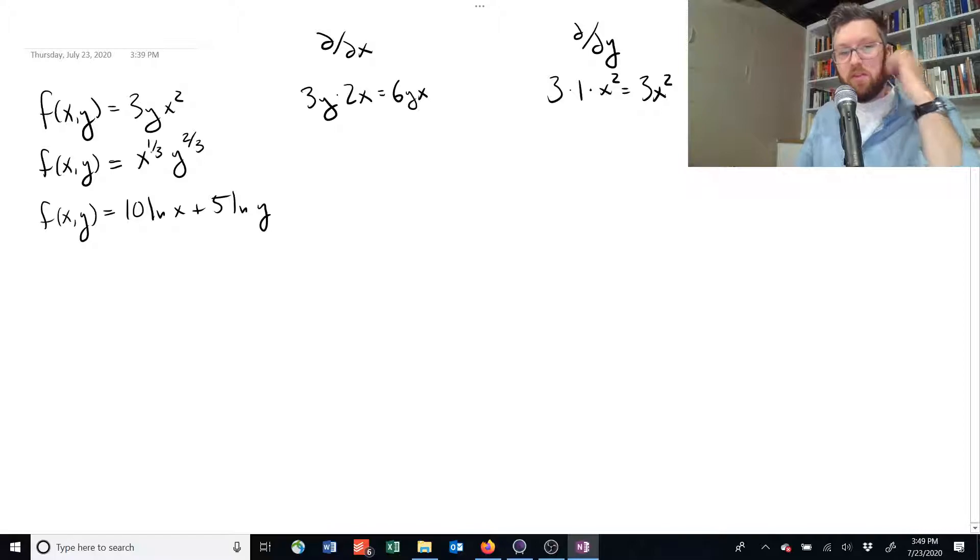We have x to the power of one-third times y to the power of two-thirds. So if we take the derivative with respect to x, we need to take the exponent of one-third and bring it out front. Then we need to subtract one from there. And we can just leave the y and write it as is, y to the two-thirds.